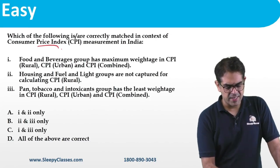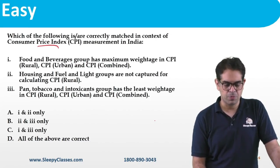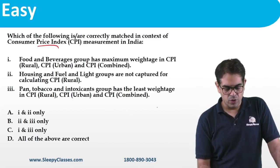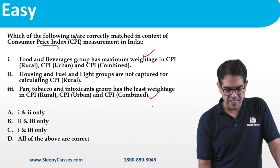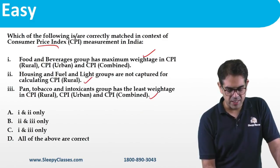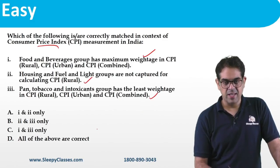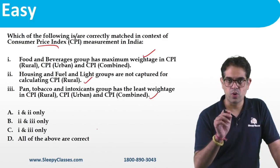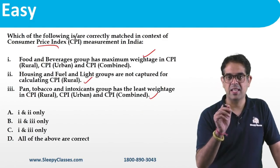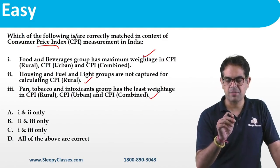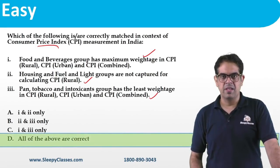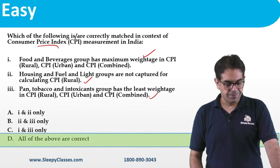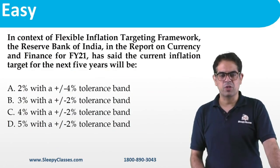Regarding Consumer Price Index (CPI): food and beverages have the maximum weightage — this is correct. Housing, fuel, light group is captured in CPI rural — actually, the fuel and light group is NOT captured in CPI rural. All the correct statements have been covered in lectures. Please review this chart carefully.